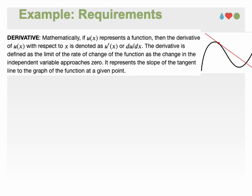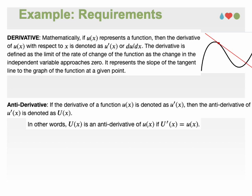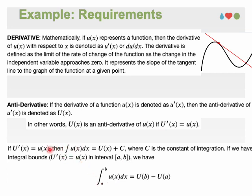It simply represents the slope of the tangent line to the graph of the function at a given point. The anti-derivative is the inverse operation of differentiation. The anti-derivative finds a function whose derivative is equal to the original function. If the derivative of capital U is equal to small u, we take indefinite integral of both sides. The definite integral within interval AB is given using the following relationship.